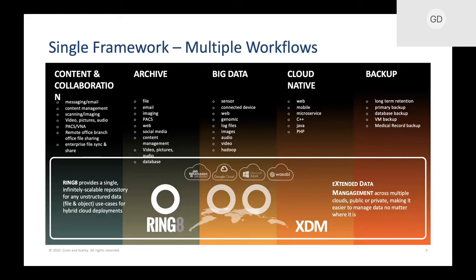We pride ourselves on the ability to serve multiple use cases in a secure, multi-tenant, multi-site, and multi-cloud way. We have what's called Ring 8 — our distributed file and object platform, software-defined on UCS — but we also have a component called Extended Data Management. This allows us to extend a workflow from on-premise to cloud of choice — one to many, many to one — as a tier, a copy, in a very ubiquitous way, all derived from policy.